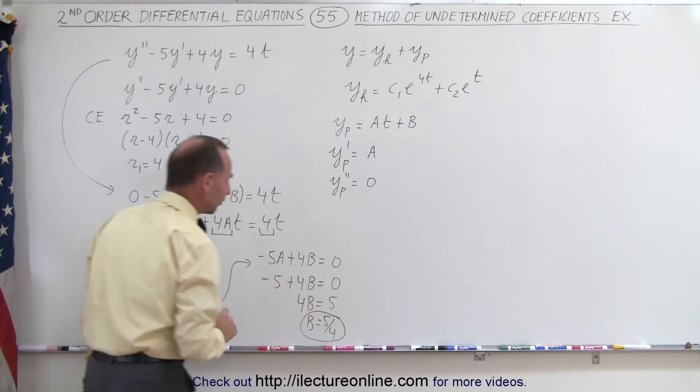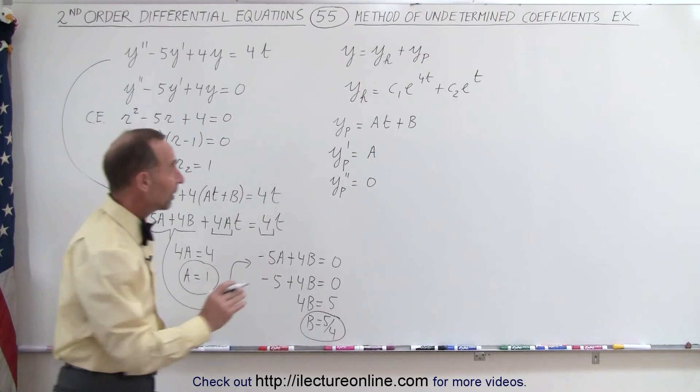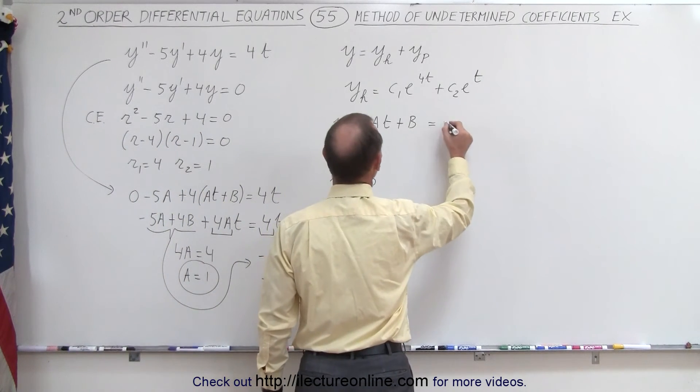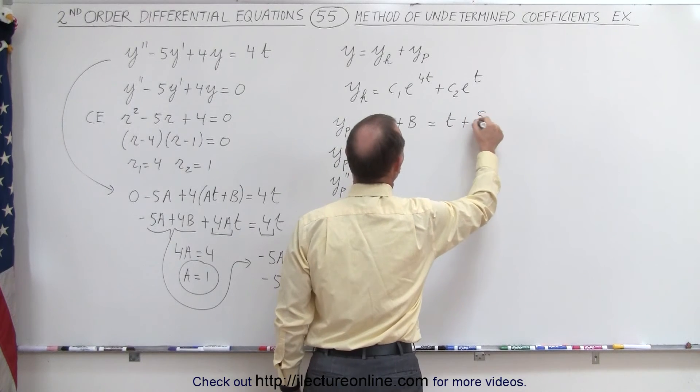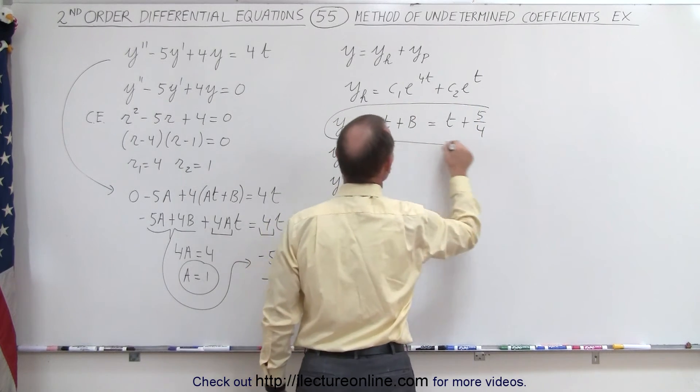So there are the two values for A and B, which means the particular solution can then be written as t + 5/4. So there's the particular solution.